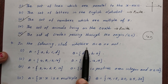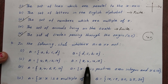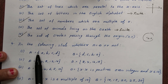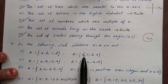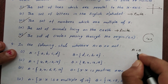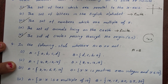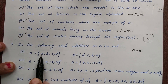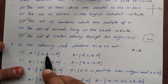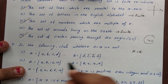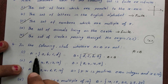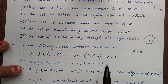In the following, state whether A equal to B or not. A is equal to B when they have exactly the same elements. Here A = {a, b, c, d} and B = {d, c, b, a}. The elements are the same, so A is equal to B.